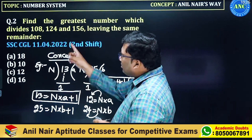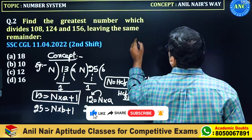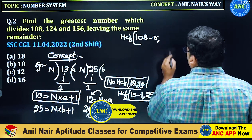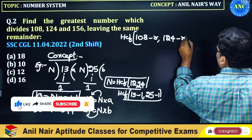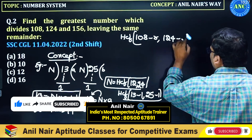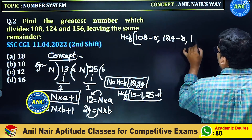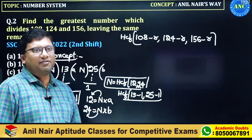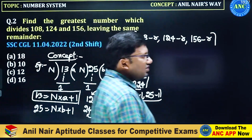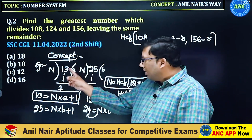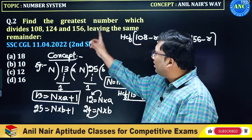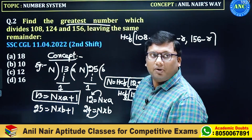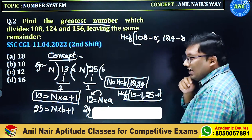So the basic idea is: if 108, 124, and 156 are giving some remainder r, the answer is the HCF of (108 minus 8), (124 minus 8), and (156 minus 8). The greatest number will be a factor of 108 minus 8, a factor of 124 minus 8, and a factor of 156 minus 8.